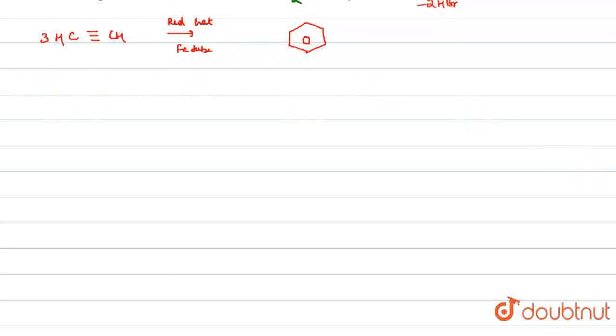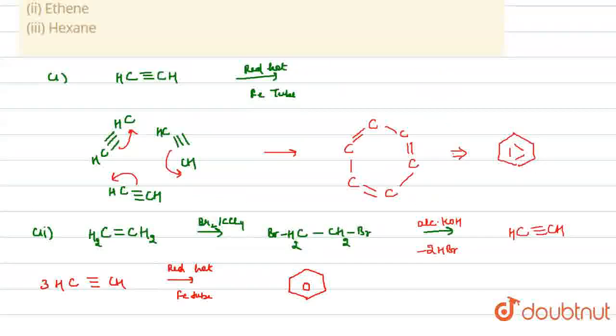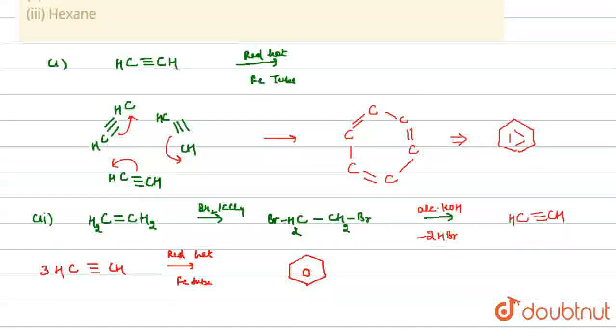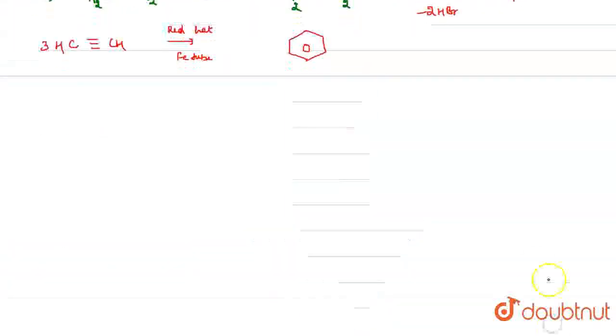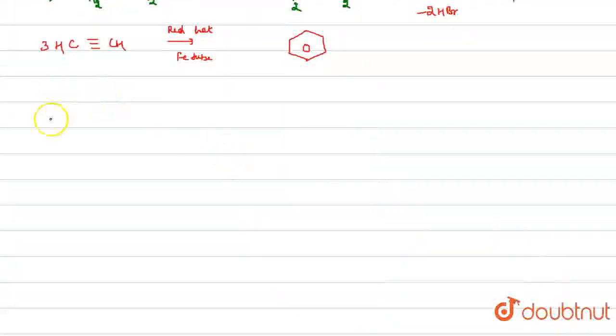Next, we are given hexane molecule. To convert a hexane molecule into benzene, here also a set of polymerization reaction occurs. First, we arrange it in the form of a structure of benzene.